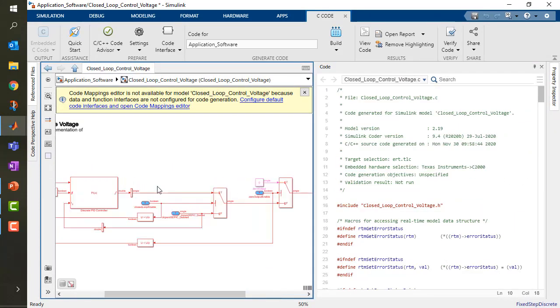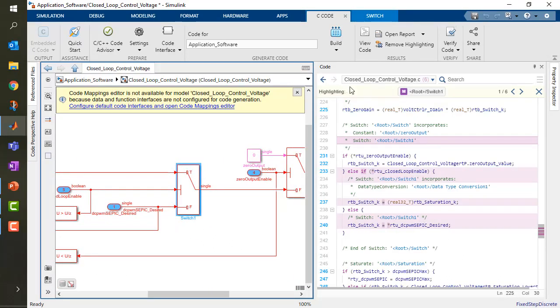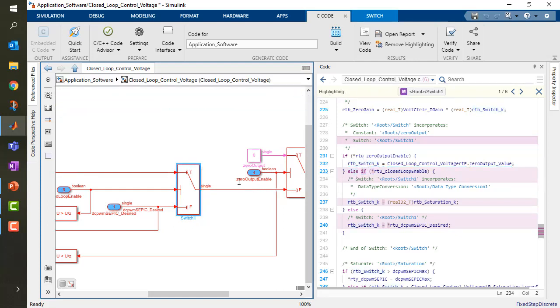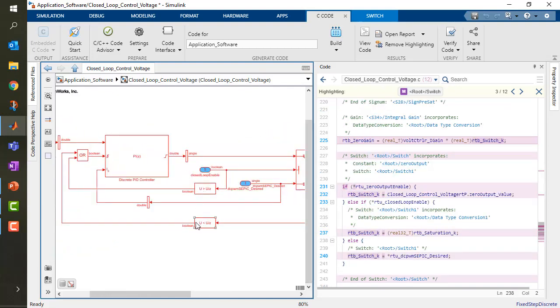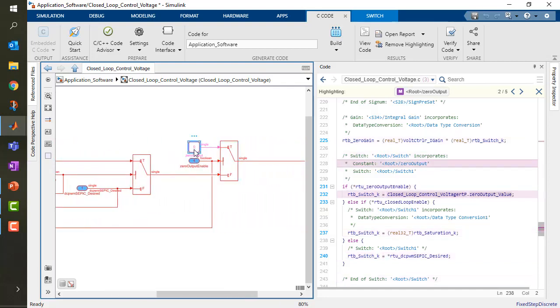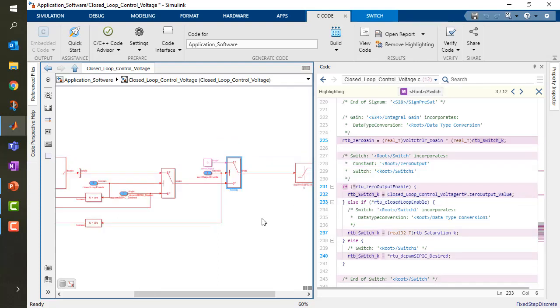If I go back to my closed loop control system, and if I instance pick this switch, the code here will automatically go to the C code generated for this subsystem, and I will see the switch actually how this is going to be implemented. It's a great way to learn how the embedded code generation works, and to quickly see how my parameter configuration is going to affect the generated code.